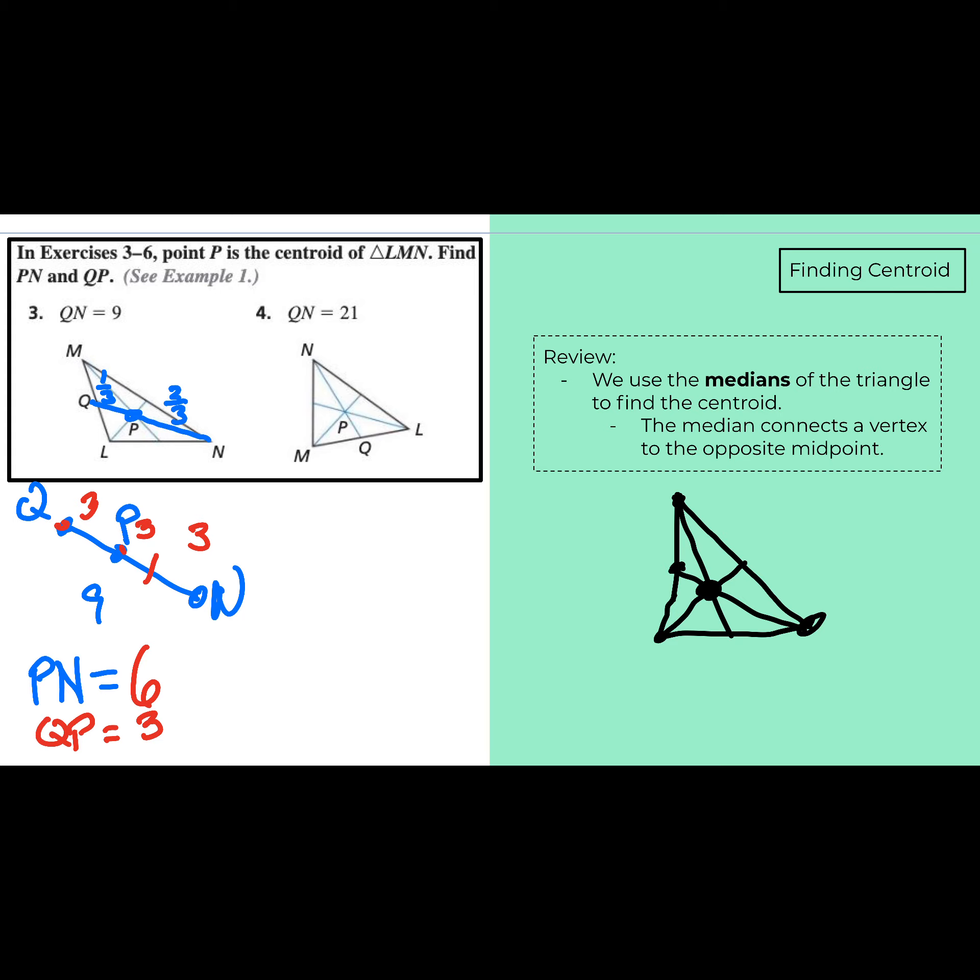All right, let's look at another example. In this case, QN is 21. We need to find PN, so two-thirds of 21 would give us 14, and then one-third of 21 would give us seven. This little one-third part would give us seven. Questions on centroid?